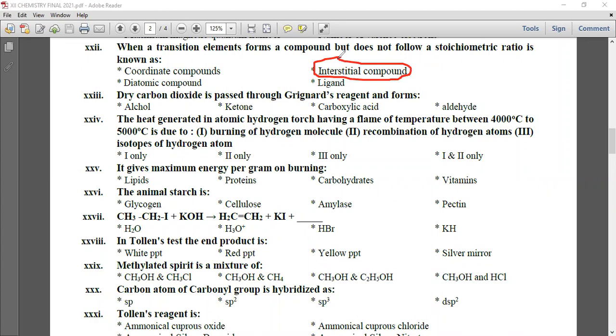Dry carbon dioxide is passed through Grignard reagent to form carboxylic acid. The heat generated in an atomic hydrogen torch having a flame temperature between 4000 to 5000°C is due to the recombination of hydrogen atoms. When two atomic hydrogen combine to form molecular hydrogen, bond formation is an exothermic reaction, which releases heat and gives maximum energy.